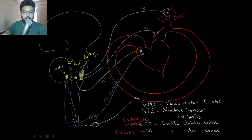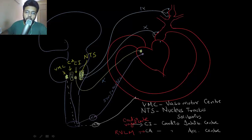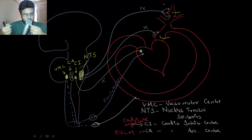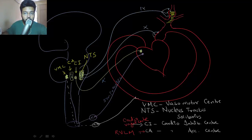Next we'll be discussing the regulation of blood pressure with the help of the baroreceptor reflex. Baroreceptors are located at the carotid sinus and the aortic sinus. These are mechanical receptors — they get stimulated when they are stretched. If your body has increased blood pressure somehow, more blood will go to these areas and stretch the carotid and aortic sinus.